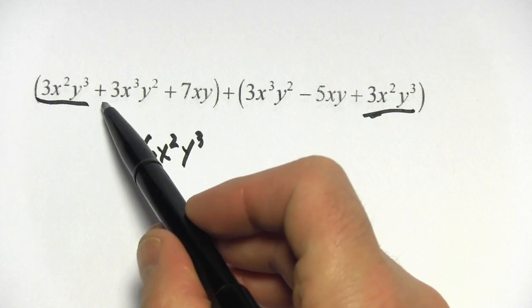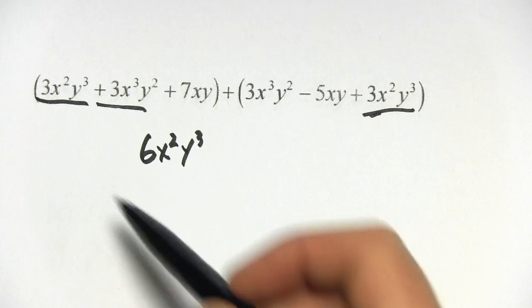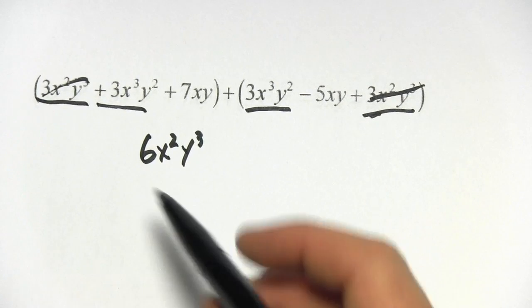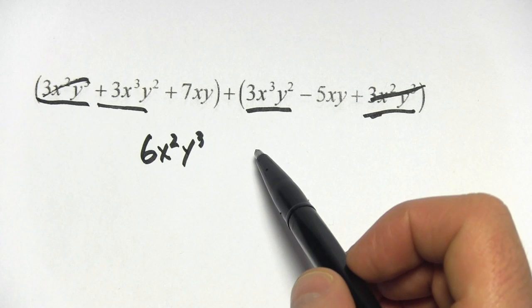And then our next term here, 3x cubed y squared. Actually, let's cross those out. Here's an x cubed y squared. Again, those are positive 3, so we'll have a 6.